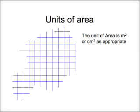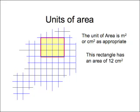Units of area. The unit of area is square meters or square centimeters as appropriate. The index of 2 doesn't mean to square the number, it just means the name of the unit. This rectangle has an area of 12 square centimeters because it's 4 by 3 wide and you multiply them.